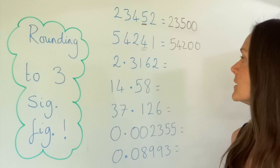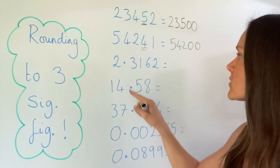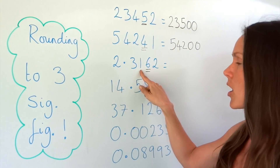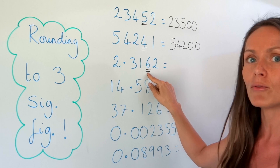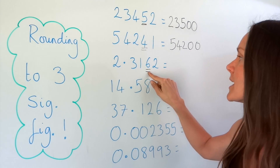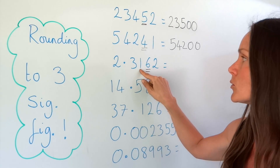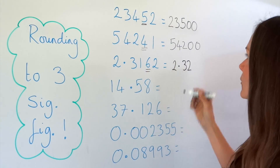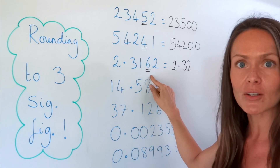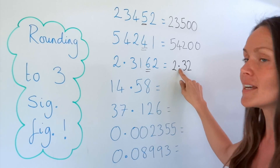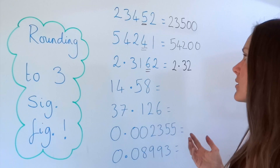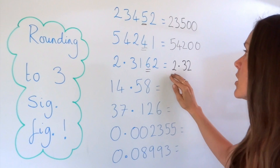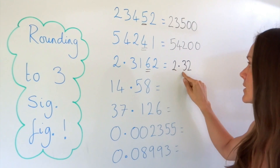Now onto number three. Again, start counting from the beginning: one, two, three figures. We check the fourth one to see if it rounds the third one up. Because it's bigger than five — remember, five or bigger always rounds up — this number is rounded up one, to the number two. So we've got 2.32. Now, in the previous two examples, extra numbers turned to zeros. But when it's after a decimal, we don't need to do that — it's still the same number. We don't need to write those zeros if it's after the decimal, so we just leave it as 2.32. That's already three significant figures.